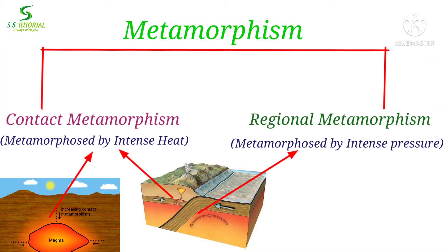There are two types of metamorphism. They are contact metamorphism, which happens when existing rocks are exposed to intense heat, and regional metamorphism, which happens when existing rocks are exposed to intense pressure.